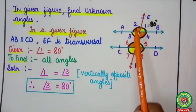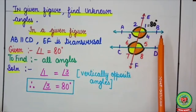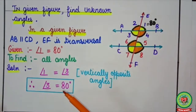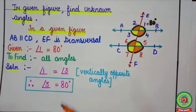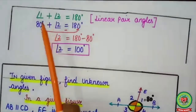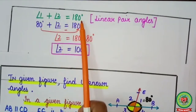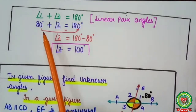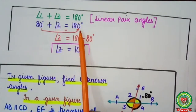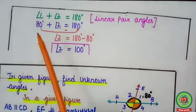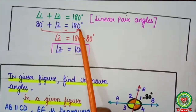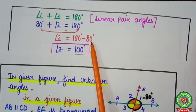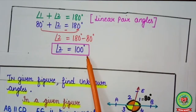Now how to find angle 2. As you know, AB is a straight line, and angle 1 and angle 2 are adjacent angles on a straight line. Therefore, angle 1 and angle 2 are linear pair angles. So angle 1 plus angle 2 equals 180 degrees. Shift 80 degrees with the sign of minus: angle 2 equals 180 degrees minus 80 degrees, giving angle 2 equals 100 degrees.